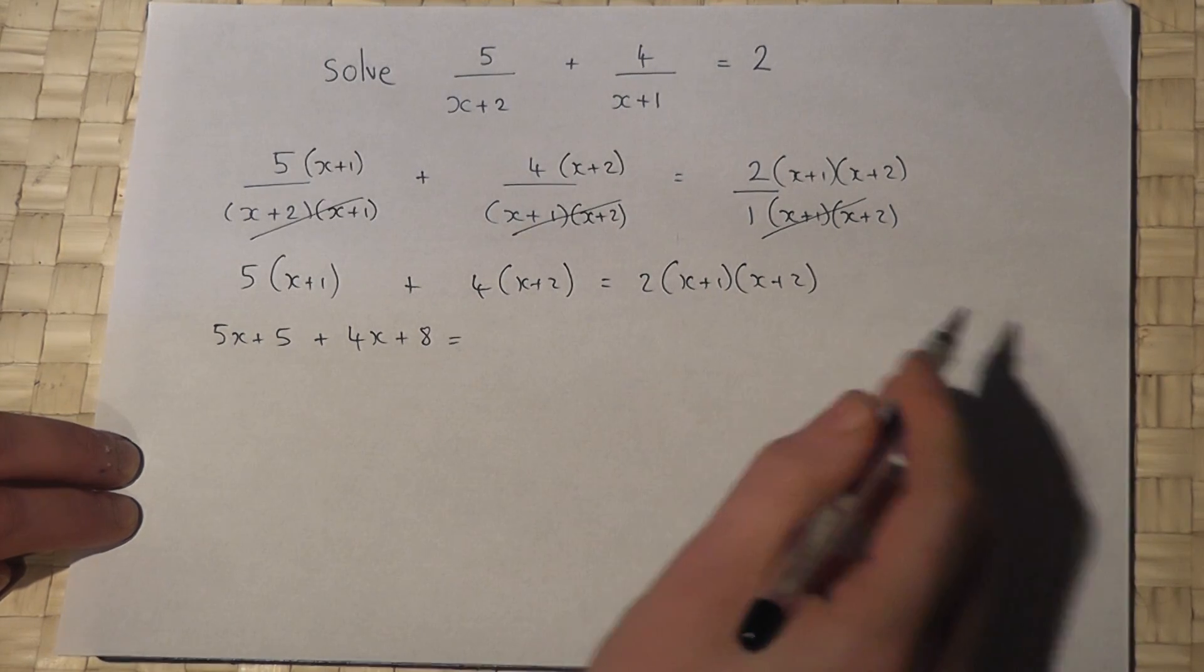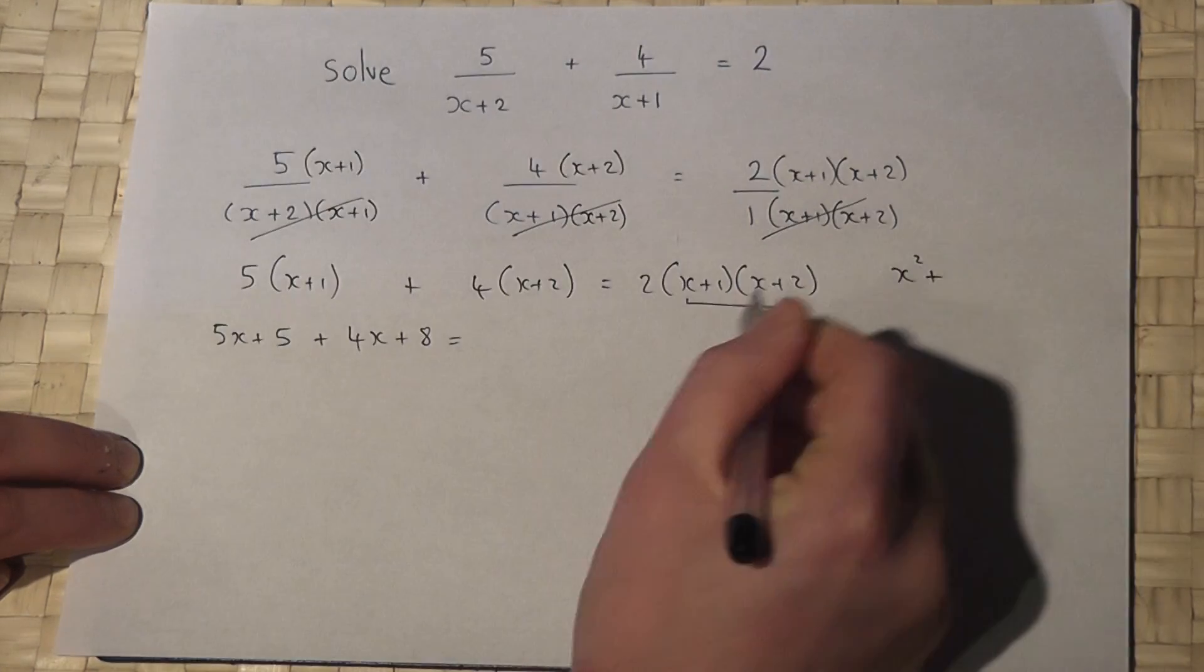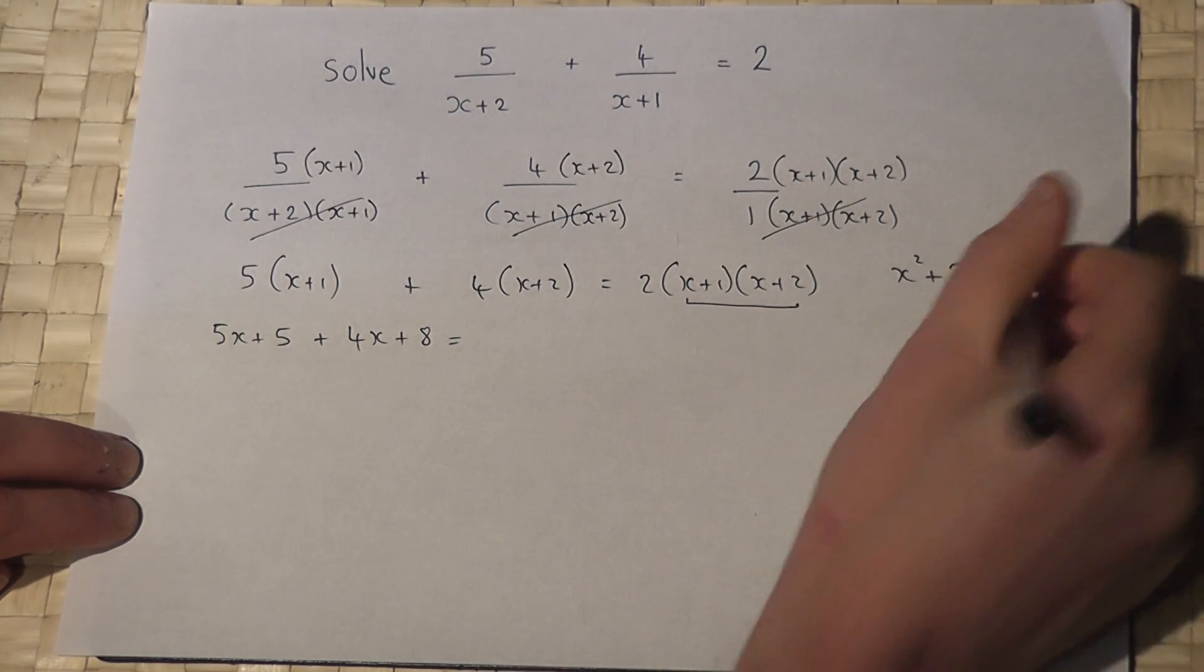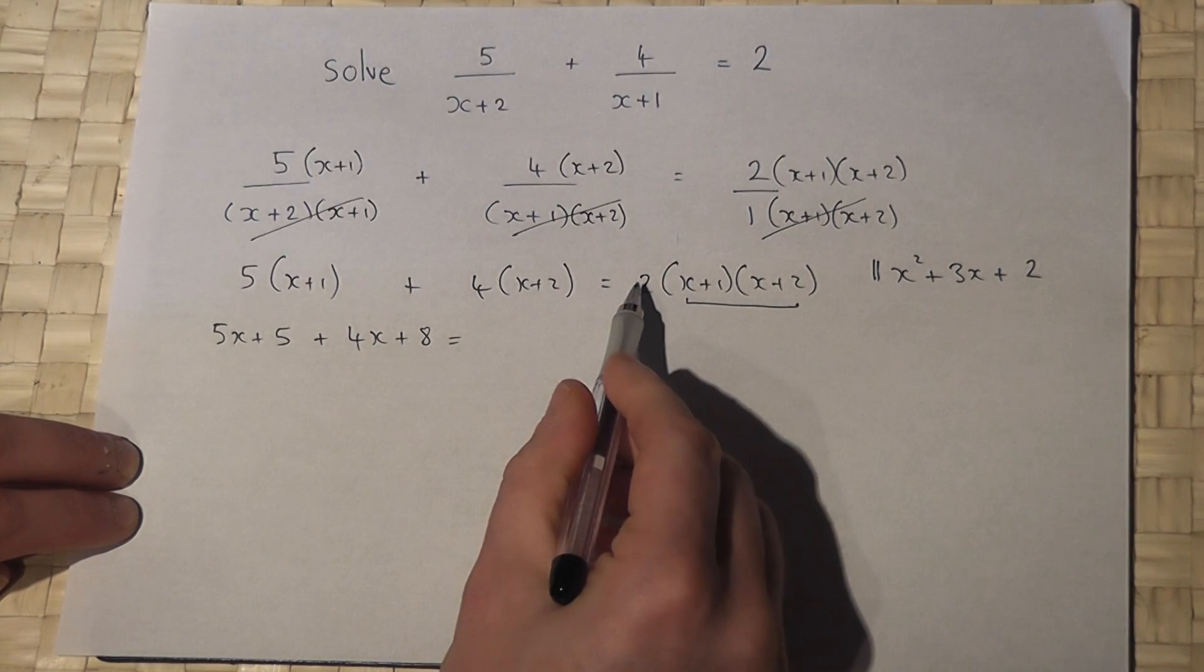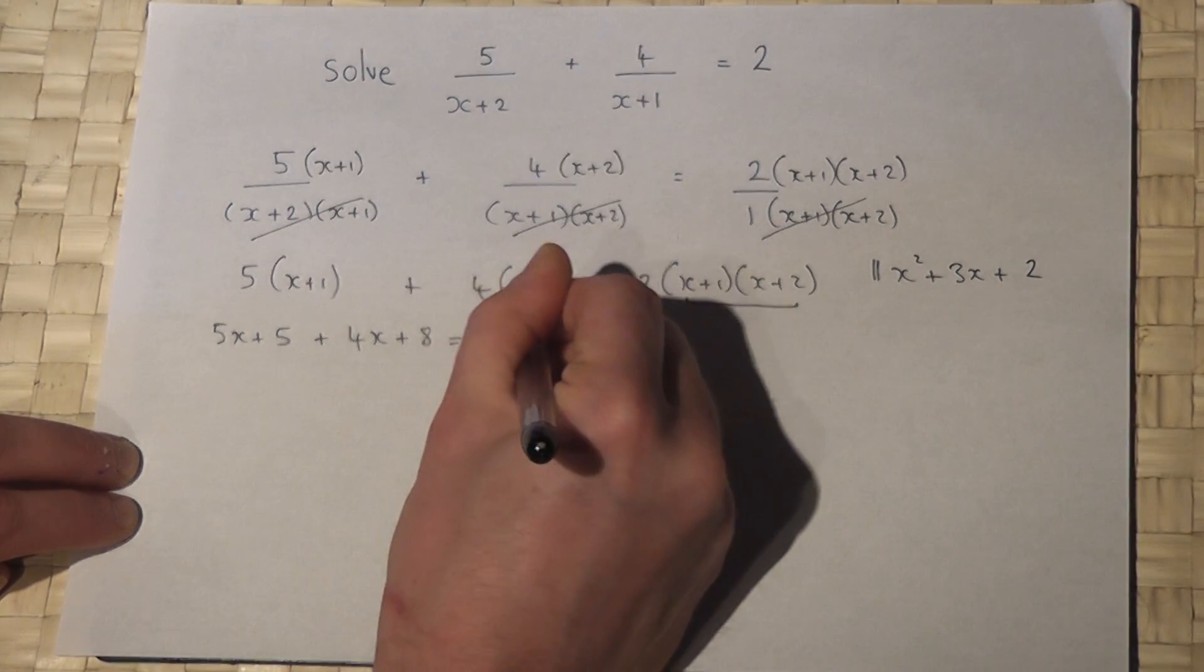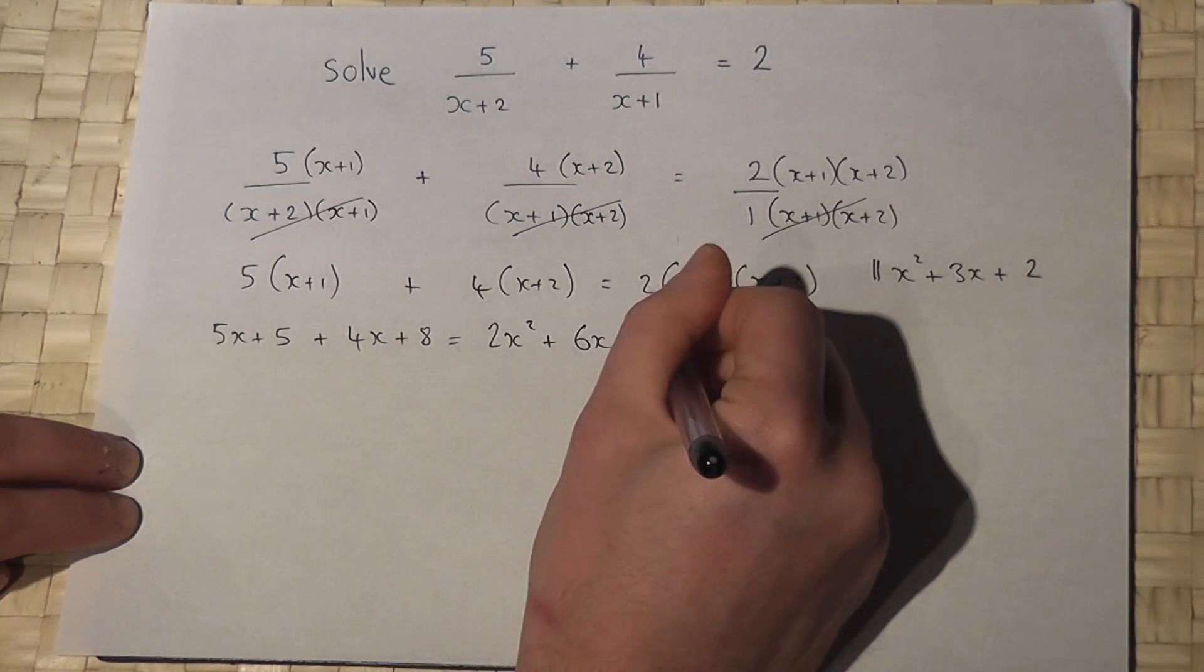If I expand this bracket first, just to the side, I get x squared plus 1x plus 2x is 3x plus 1 times 2 is 2. So if I then times it by 2, I get equal to 2x squared, 2 times 3 is 6x, and 2 times 2 is 4.